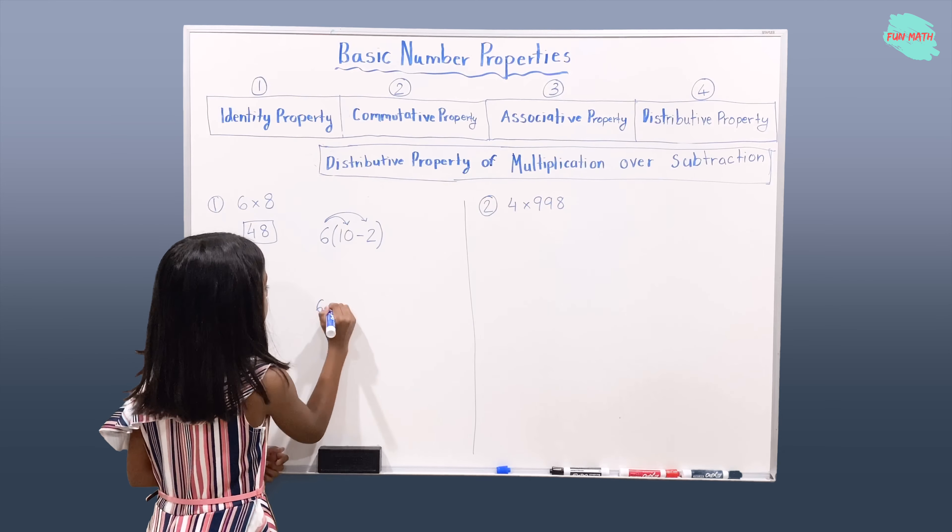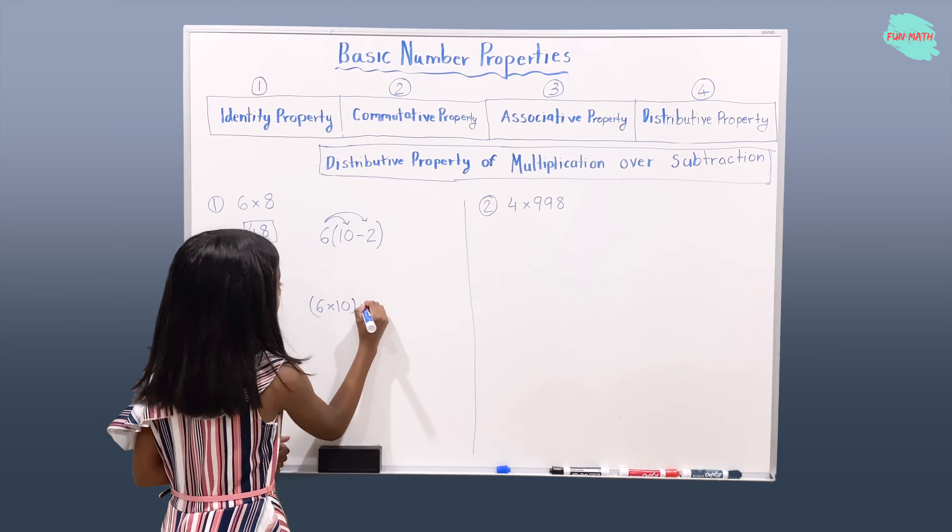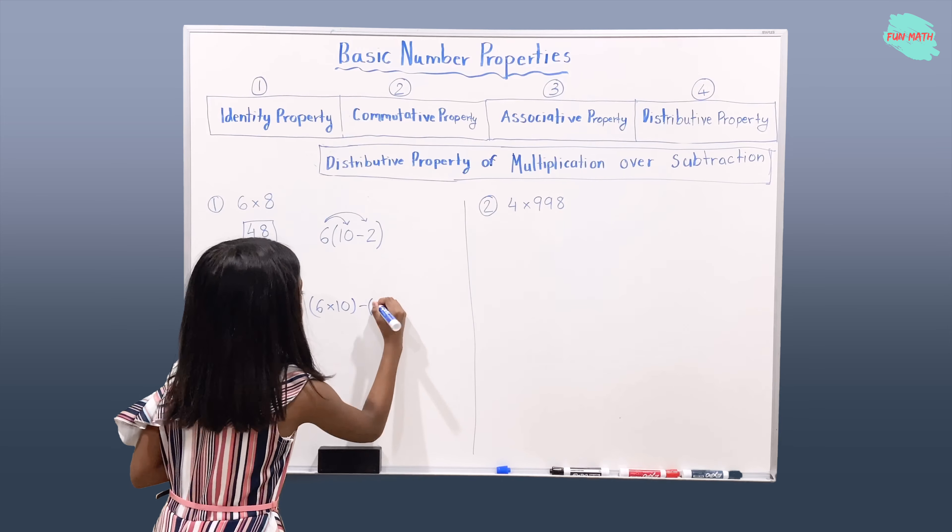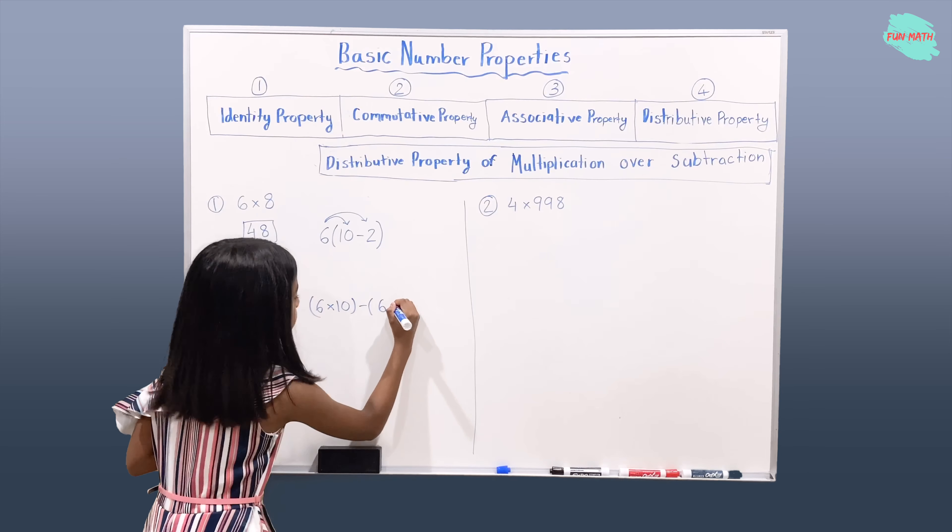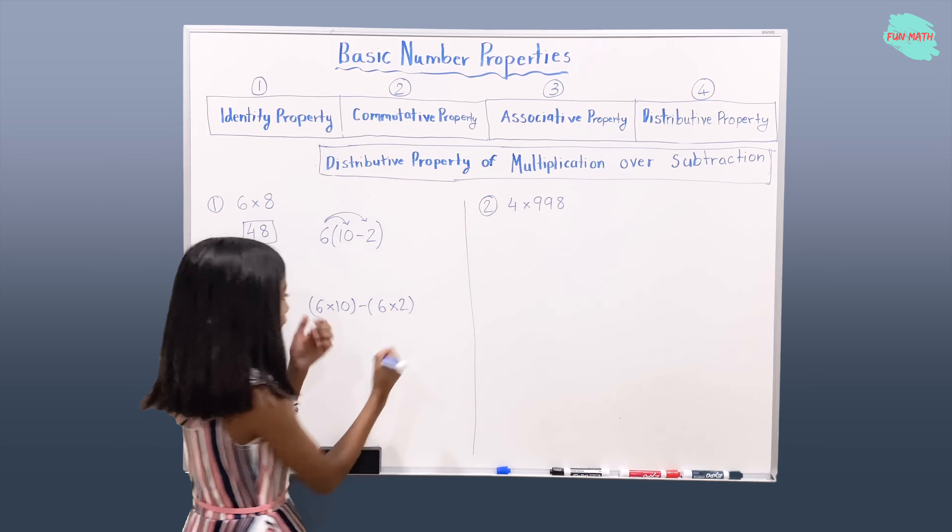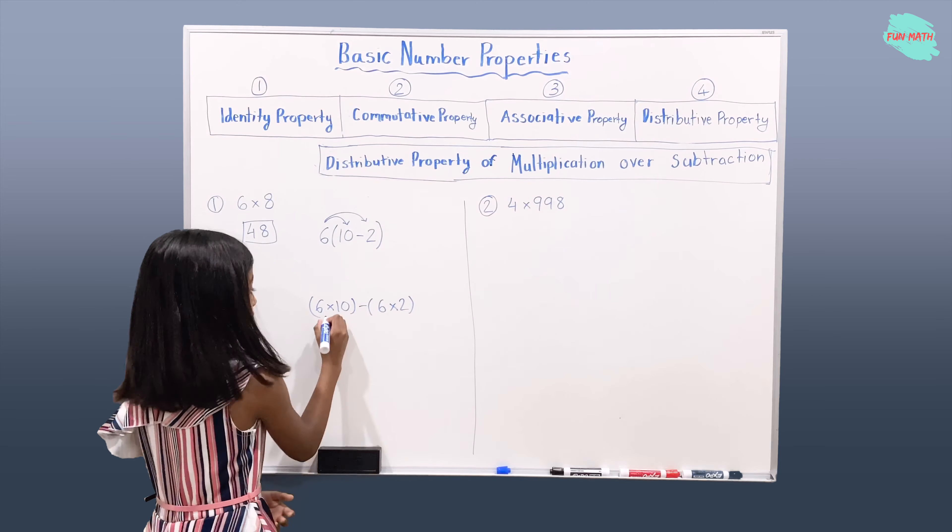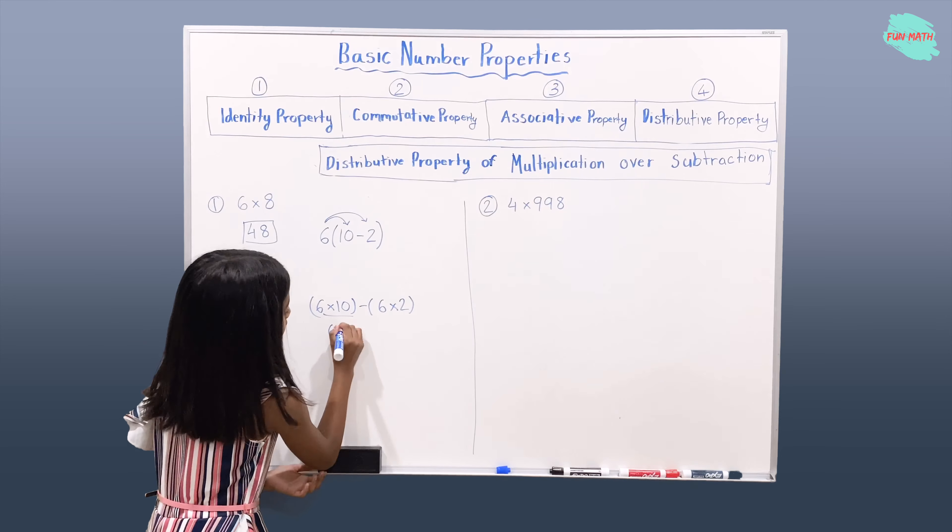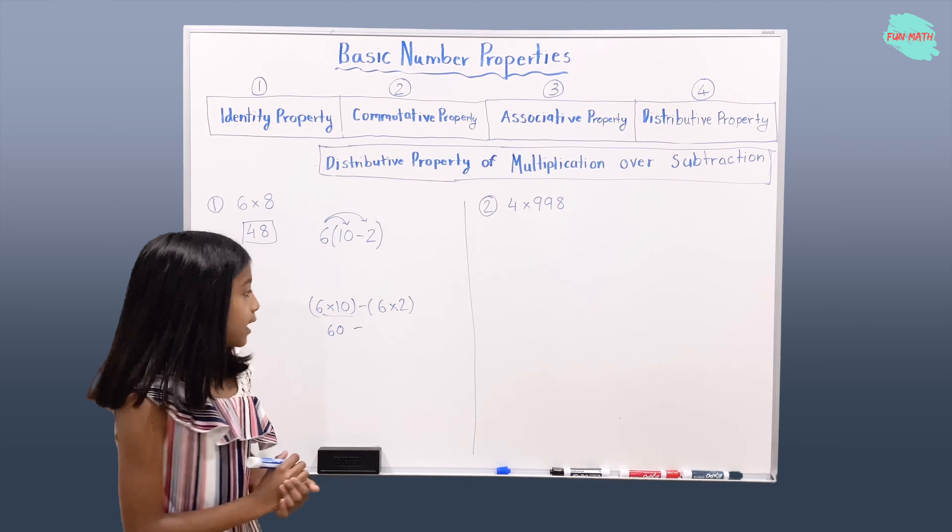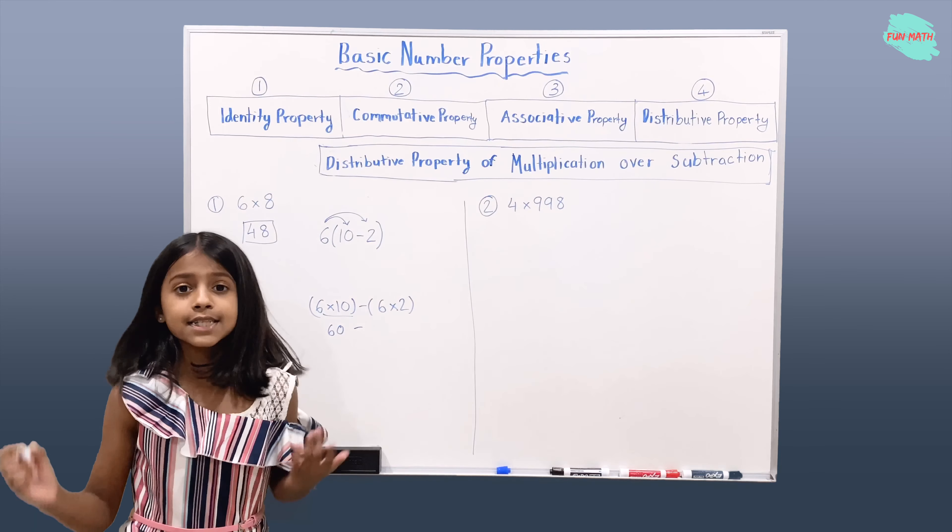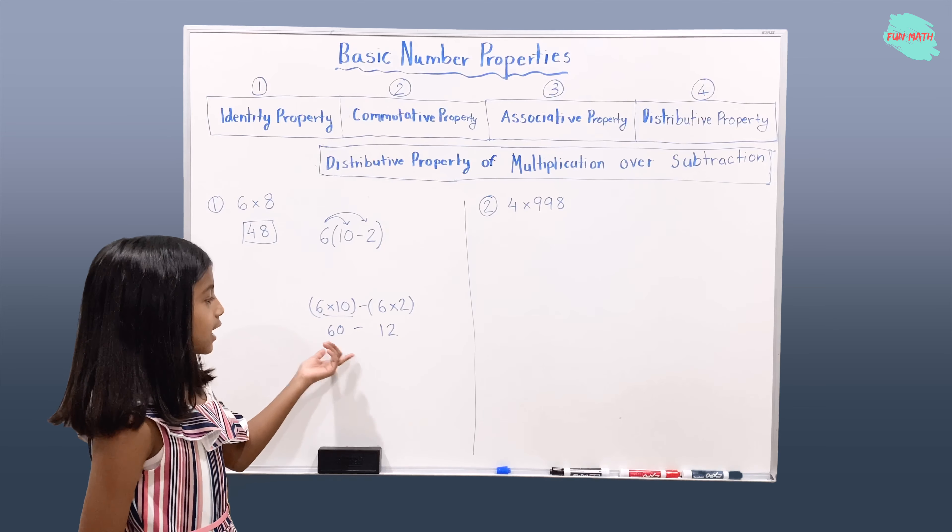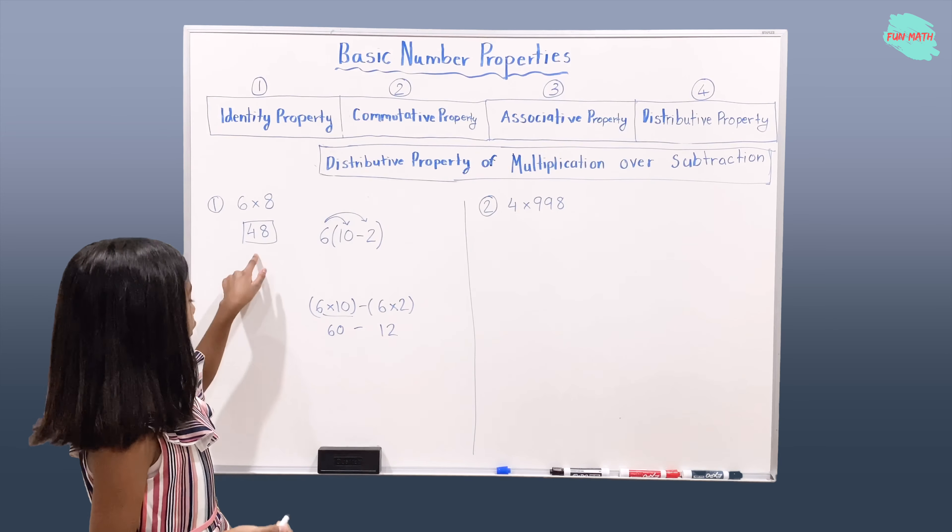Okay, 6 times 10 in parentheses, minus sign, parentheses, 6 times 2. Okay, let's solve this. 6 times 10 is 60, and minus sign, 6 times 2 is 12. Now if you subtract 60 and 12, you should get 48.